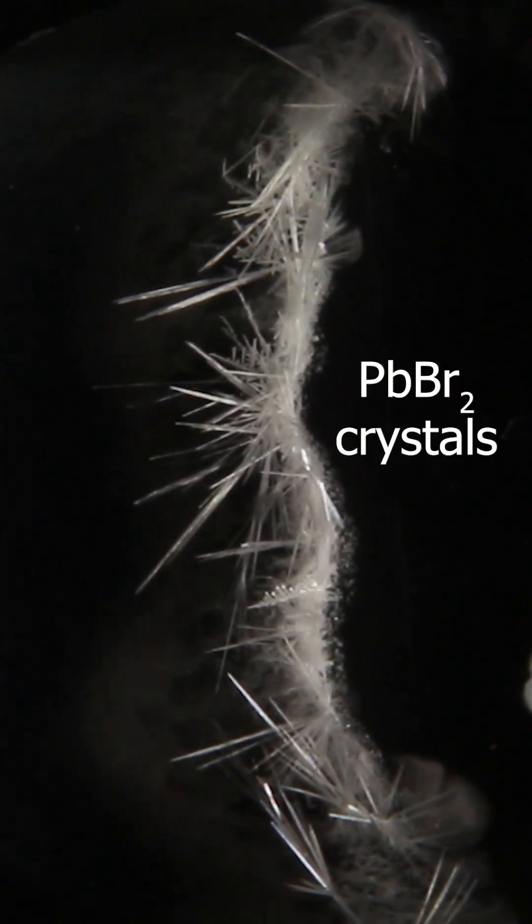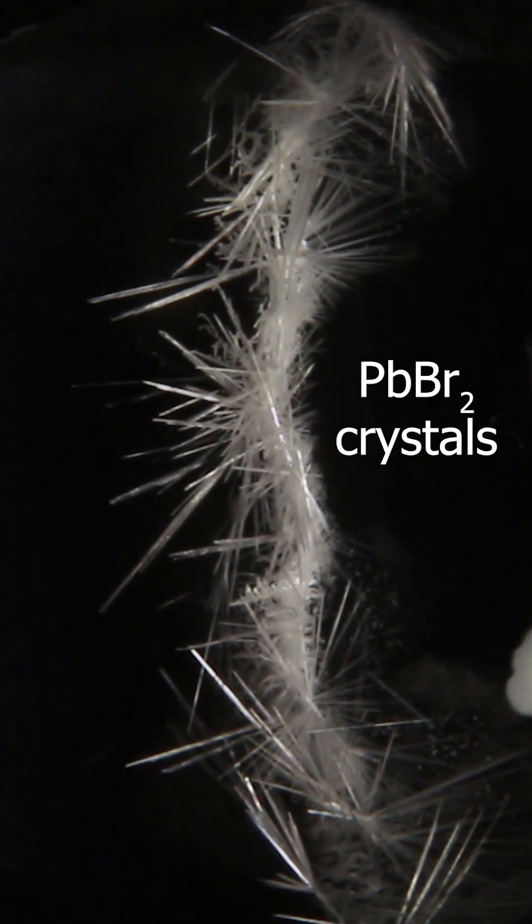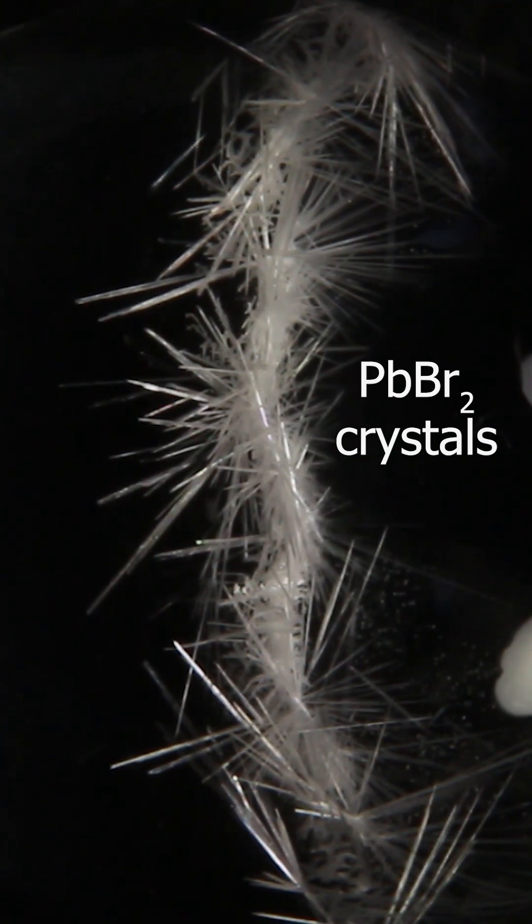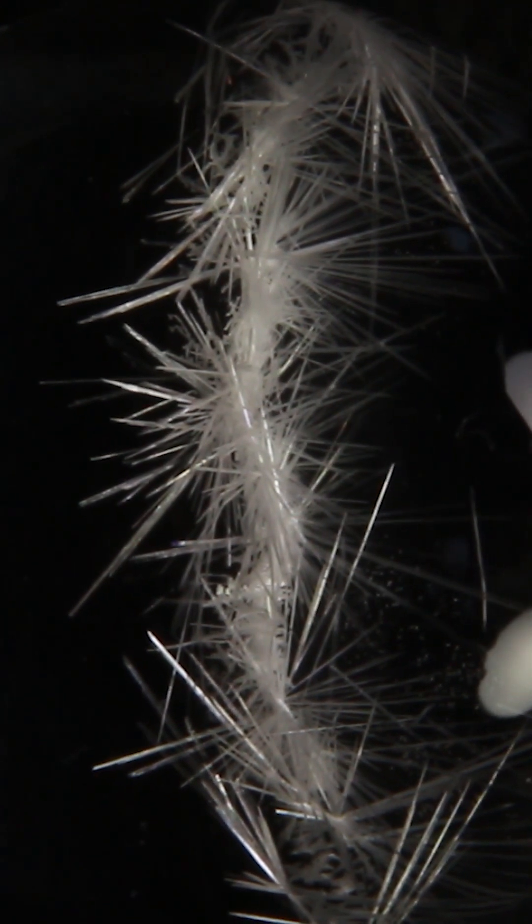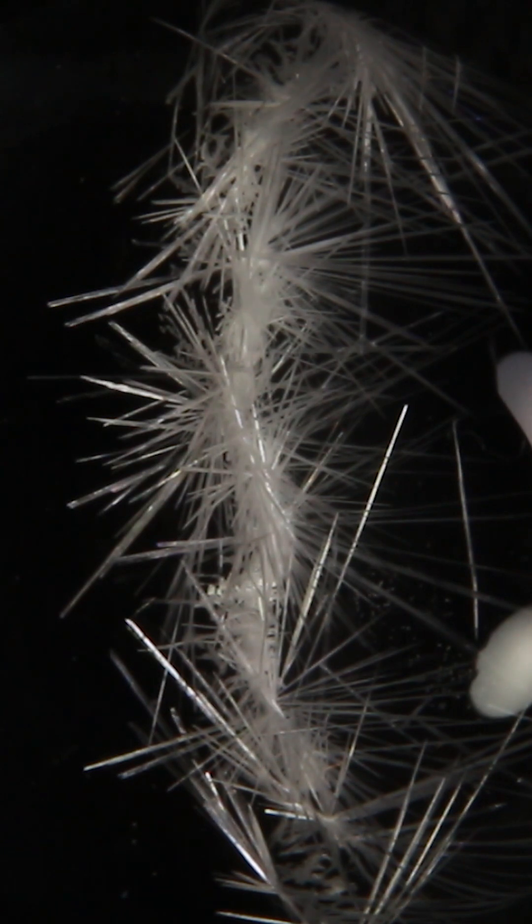These are the crystals of lead bromide. Lead ions from one side and bromide ions from another side are traveling to the middle, meeting here and forming insoluble substance.